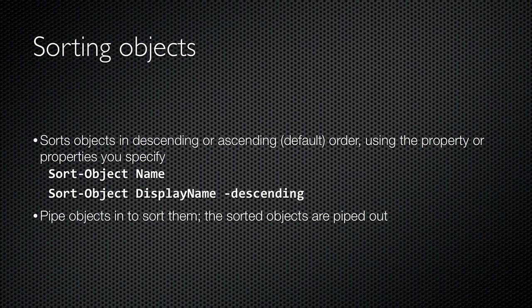The Sort-Object cmdlet accepts a property or a comma-separated list of properties and sorts objects based on the values of those properties. It sorts in ascending order by default. You can specify the descending parameter to reverse the sort order. Whatever objects you pipe in are piped right back out, just in a different order.